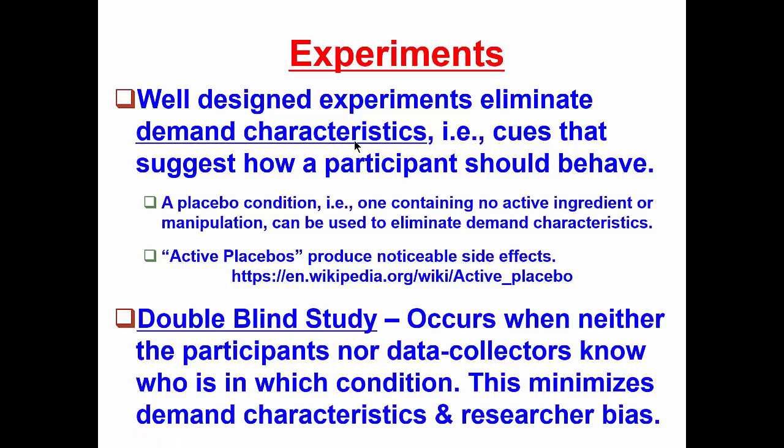We can go one step further in so-called double-blind studies. These occur when neither the participants nor the data collectors know who is in which condition. And this helps to minimize not only the demand characteristics, which is what we can minimize using either a standard placebo or an active placebo, but also the researcher bias.